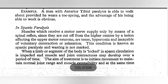Now we will see spastic paralysis. Spastic paralysis: the muscles receive motor supply by means of spinal reflex, but they are cut off from the higher centers by a lesion affecting the upper motor neuron. They are tense, hypertonic, and unable for voluntary contraction or relaxation — this condition is called spastic paralysis. There is no wasting. When the limb or segment of the body is locked in spasm, circulation is impeded, and muscle and joint contractures develop over time.